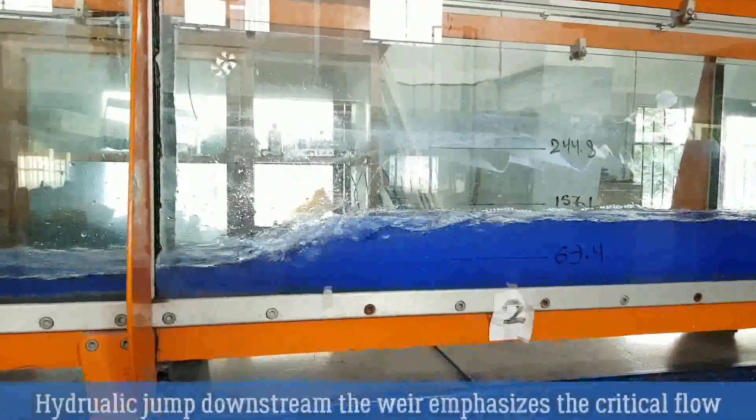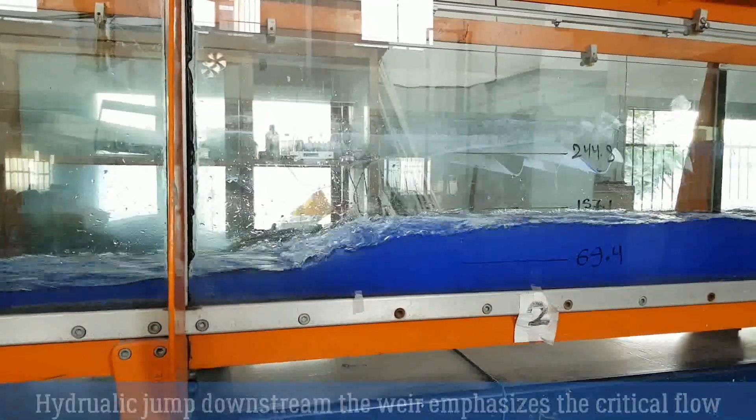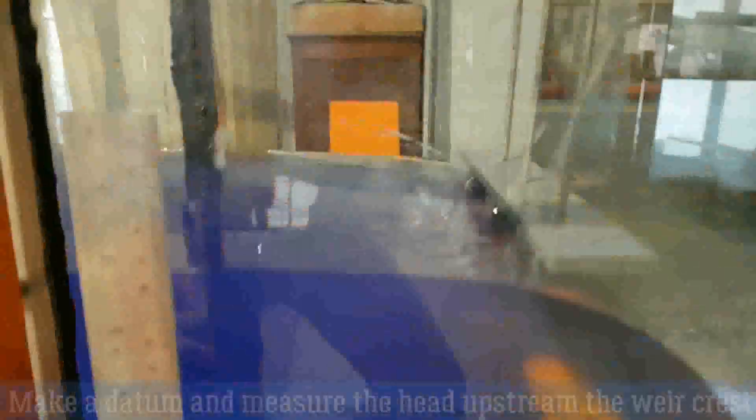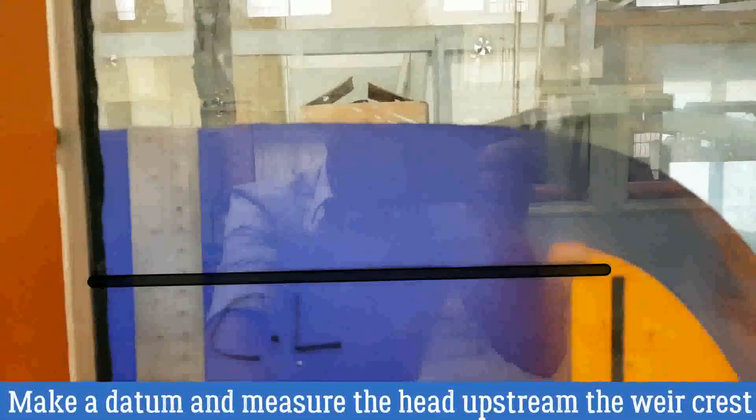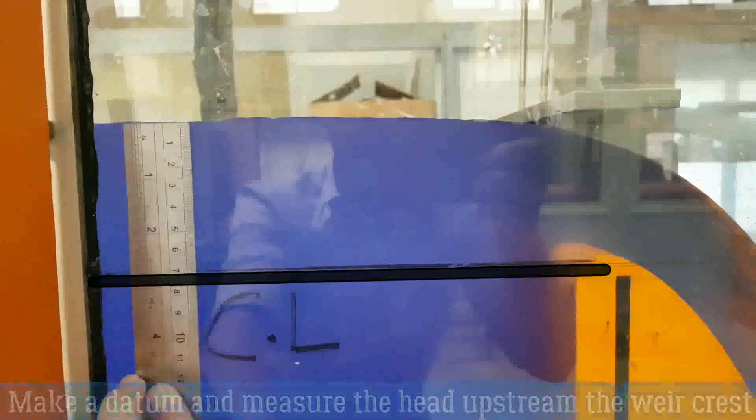Hydraulic jump downstream the weir emphasizes the critical flow condition. Now we are going to measure the head just upstream the weir. Make a datum and measure the head upstream the weir first using a ruler.